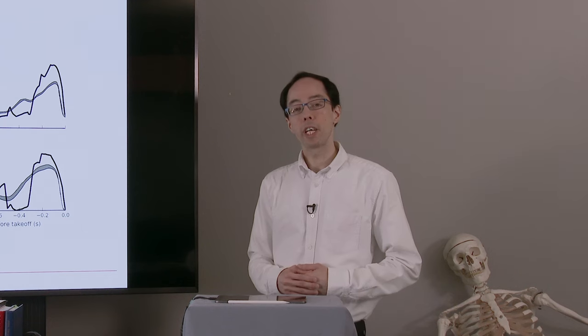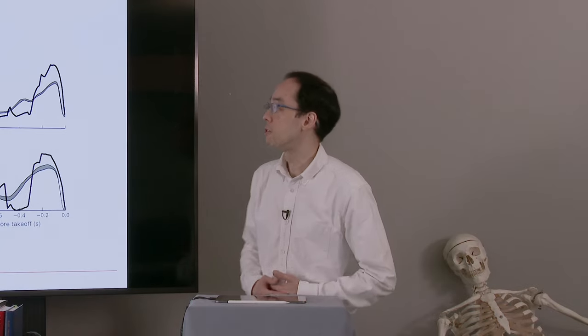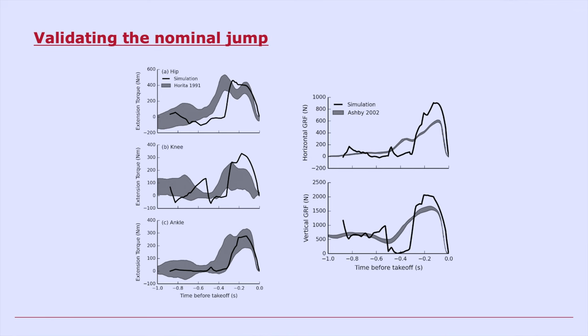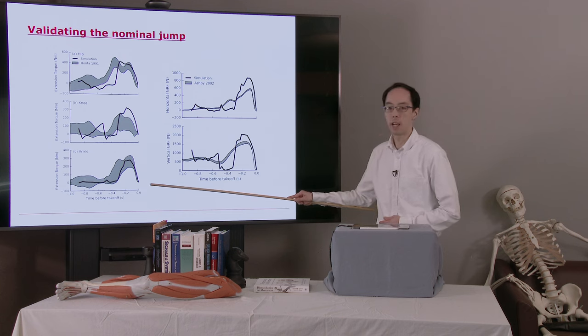He was actually looking at how we could augment the body to make humans jump further. Before doing that, he validated the nominal jump, so the jump without any augmentation. On the left, he's looking at the extension torques from the hip, the knee, and the ankle over the time before takeoff.